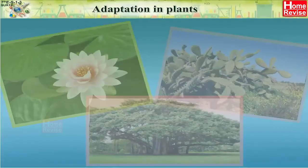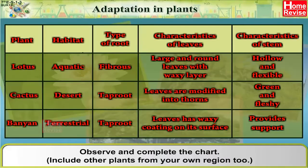Adaptation in Plants: Observe and complete the chart, including other plants from your own region too. The chart covers plants, their habitats, types of root, characteristics of leaves, and characteristics of stem.